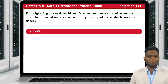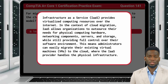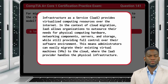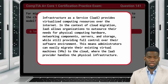The answer is A, IaaS. Infrastructure as a Service, or IaaS, provides virtualized computing resources over the Internet. In the context of cloud migration, IaaS allows organizations to outsource their needs for physical computing hardware, networking components, servers, and storage while still providing full control over their software environment. This means administrators can easily migrate their existing virtual machines to the cloud, where the IaaS provider handles the physical infrastructure.